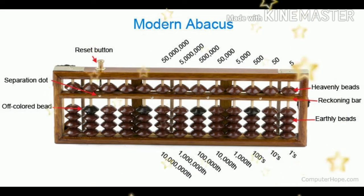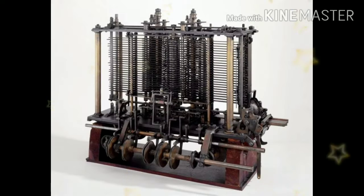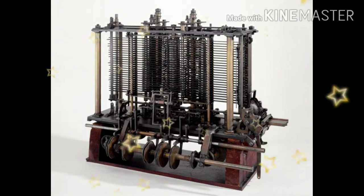Generally speaking, computers are classified into three generations. Each generation lasted for a certain period of time, and each gave us either new and improved computers or an improvement to the existing computer. We are now going to discuss the first generation, second generation, and third generation.